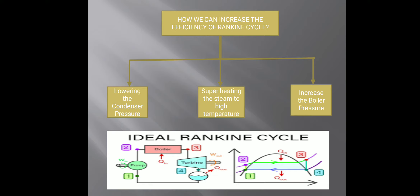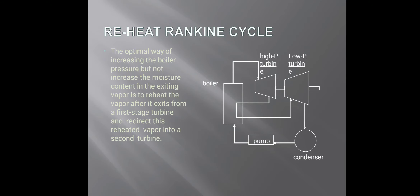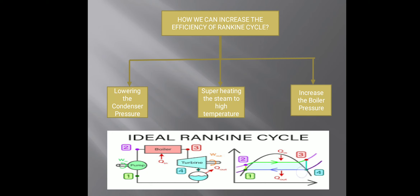However, there is a disadvantage to lowering the condenser pressure: the expansion line enters the wet zone. As I mentioned in the previous lecture, the wet zone is very dangerous for turbine blades because the liquid droplet content in the steam increases, which will erode the turbine blades.